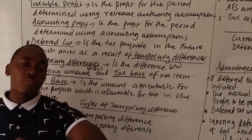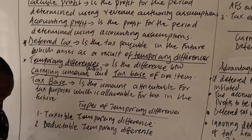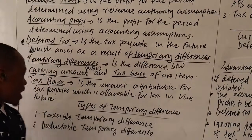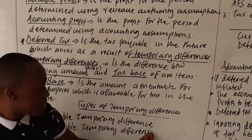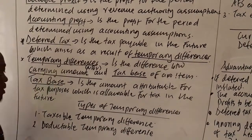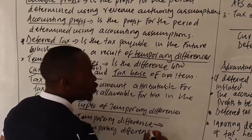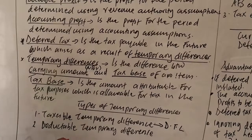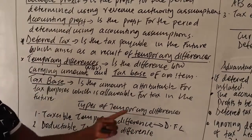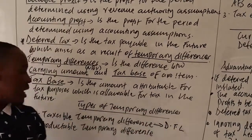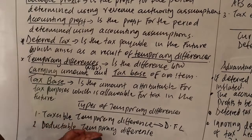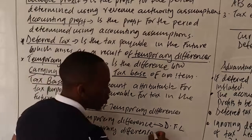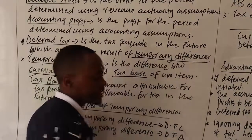Of the temporary differences, we have two types. One is the taxable temporary difference, and we have the deductible temporary difference. A taxable temporary difference gives rise to a deferred tax liability. A deductible temporary difference gives rise to a deferred tax asset.